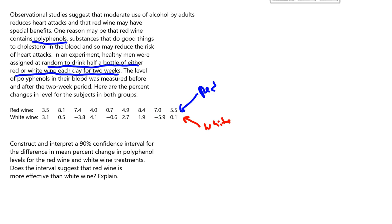So what we're supposed to do here is construct and interpret a 90% confidence interval. There are no hypotheses here to test or anything like that. But when you want to produce a confidence interval, you still need to check the assumptions that would normally go with the appropriate test, which in this case would be a two-sample T-test or a two-sample T-interval. Number one, you're supposed to check that both groups were an SRS. And it does say that healthy men were assigned at random to drink, so that's a good thing.